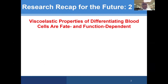It turns out that such materials are very much around us. The human tissue itself is largely viscoelastic. So we measured viscoelastic properties of individual cells to see if they have any importance for cell function. And indeed, that's what we found out in this work.